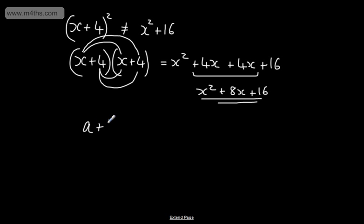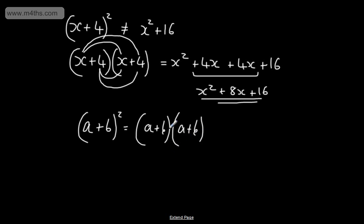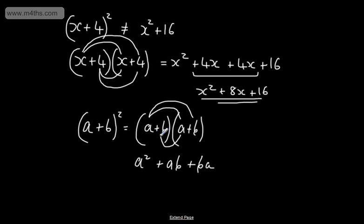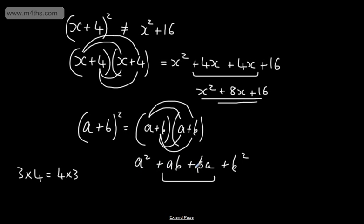Let's do (a+b) squared = (a+b)(a+b). a times a = a squared; a times b = plus ab; b times a = plus ba; b times b = plus b squared. The two middle terms are identical — ab and ba are the same. Writing alphabetically: a squared plus 2ab plus b squared. Expanded and simplified.